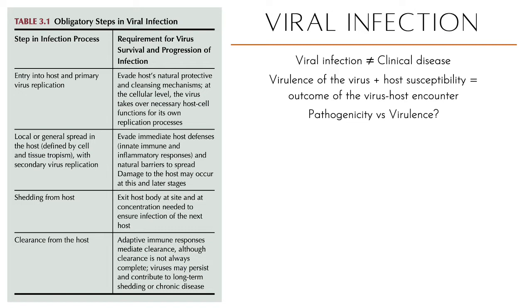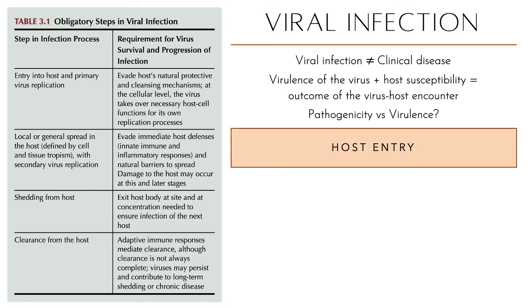Each virus we will discuss in the next weeks will have a different pathogenicity and different factors which dictate how pathogenic it is to its specific host or target species. Now, how does viral infection happen? The steps are outlined on the table on the left.